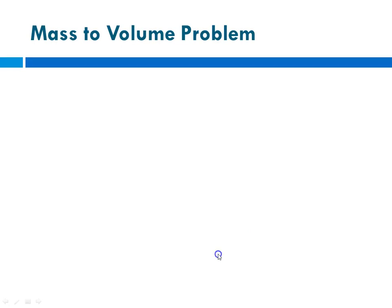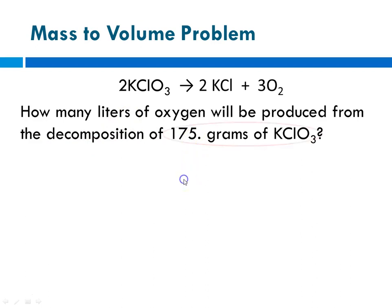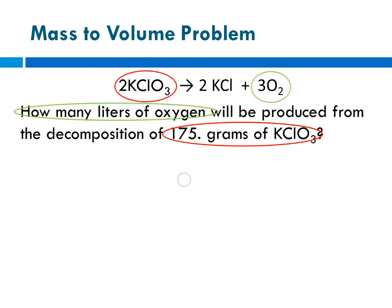This is going to be a mass-to-volume problem. For our same reaction — the decomposition of potassium chlorate to yield potassium chloride and oxygen — we're asked how many liters of oxygen will be produced from the decomposition of 175 grams of potassium chlorate. The given is 175 grams of potassium chlorate, and our unknown is how many liters of oxygen. Because we're starting with grams, we'll calculate molar mass, and at the second half of the problem, we'll use molar volume to get to liters.